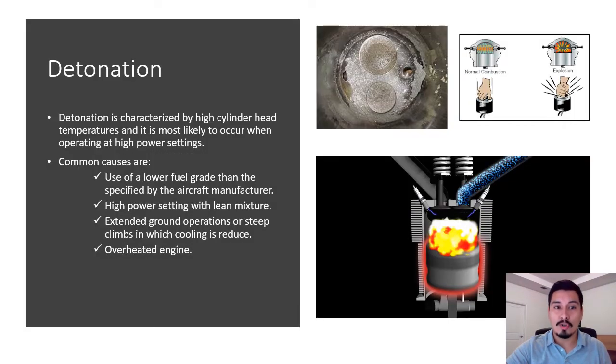The other type of abnormal combustion is detonation, characterized by high cylinder head temperatures. It most likely occurs when operating at high power settings. Instead of the fuel burning normally, it will explode, creating an unbalanced force inside the engine that could completely damage the engine. Common causes are low grade of fuel, high power settings, lean mixture, extended ground operations or climbing without cooling because the engine gets overheated and the fuel will not tolerate this overheat and will start exploding.